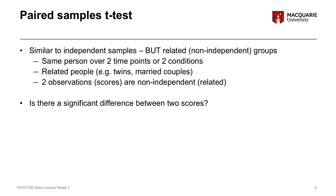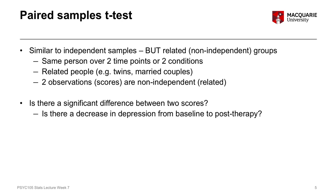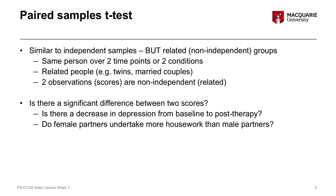The kind of question we're asking for the paired samples t-test is whether there's a difference between the two scores — on average, is there some difference between set A and set B of scores? For example, is there a decrease in depression from before therapy at baseline to after therapy? Or do female partners undertake more housework than male partners? It's a very similar research question to the independent samples t-test, but the two groups or sets of observations are not independent — they're either the same person under different conditions or related people.